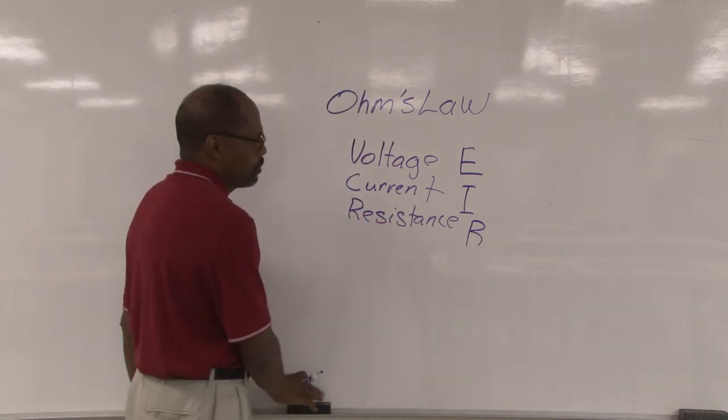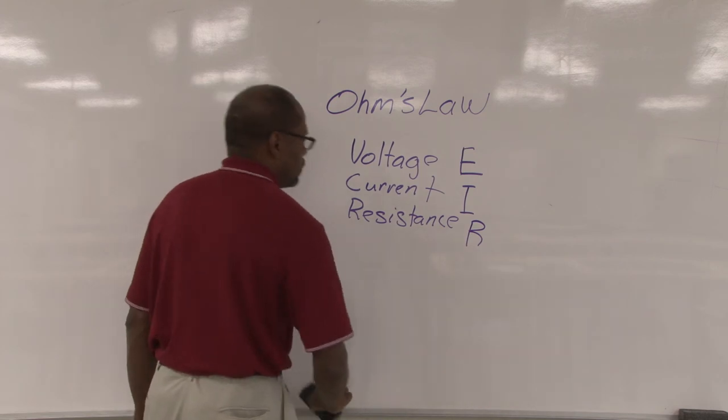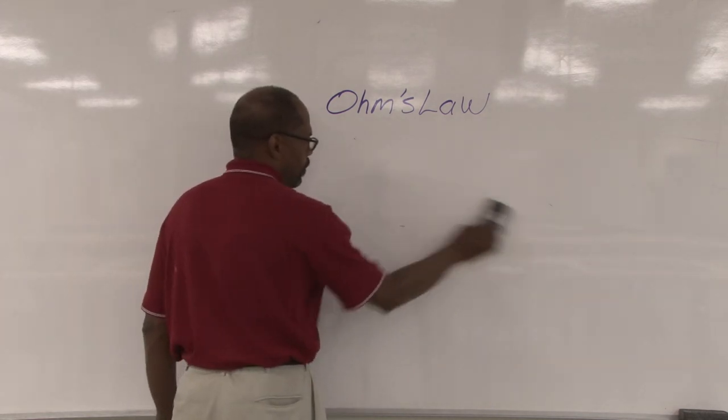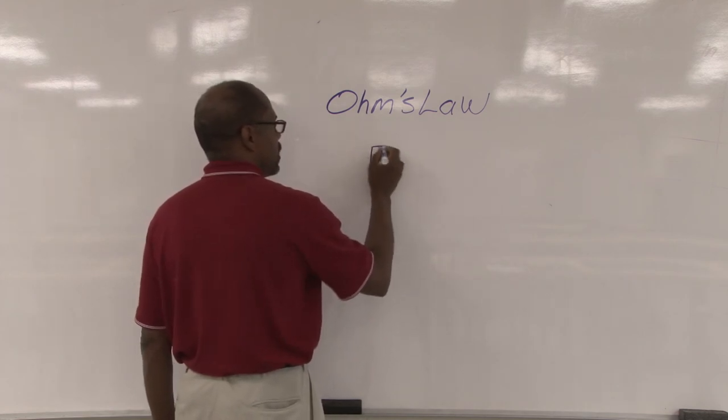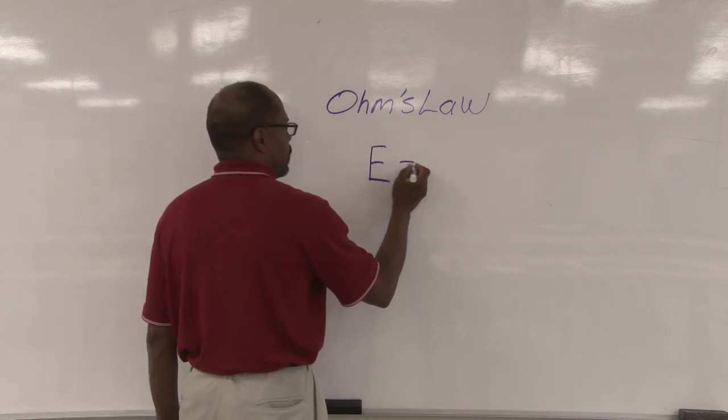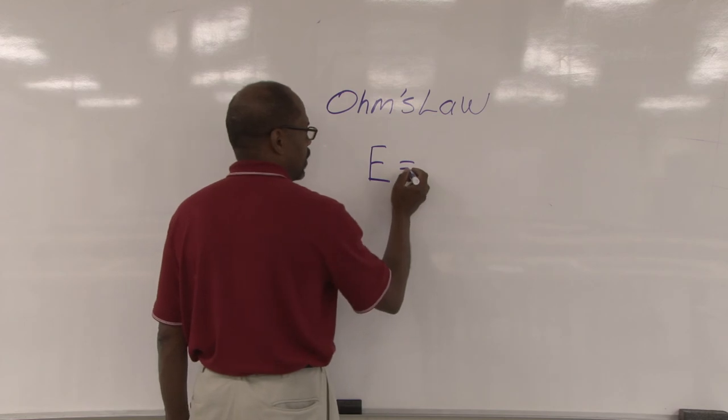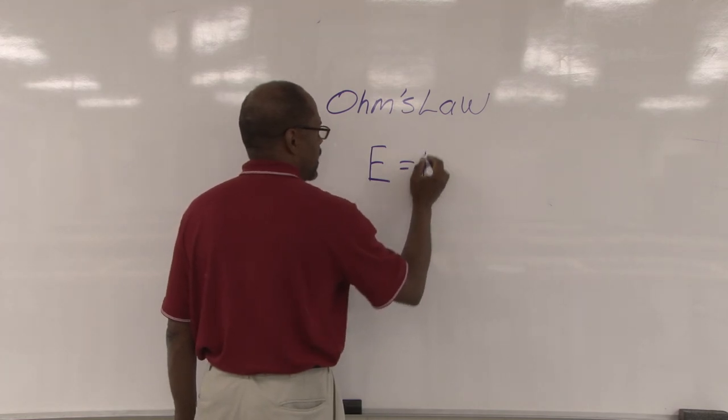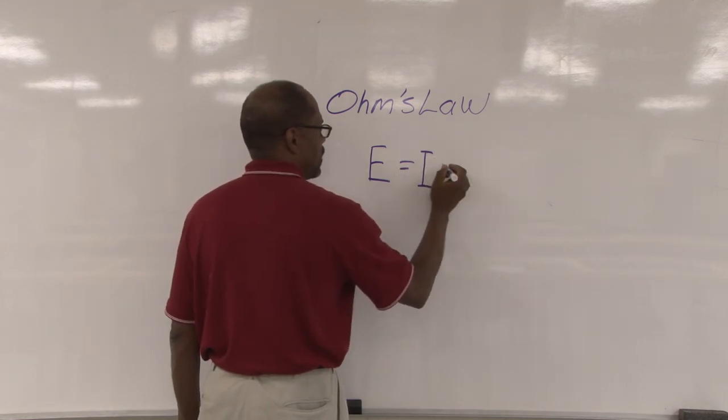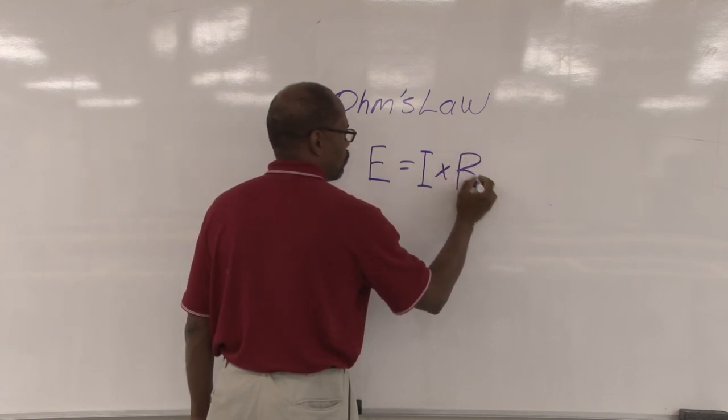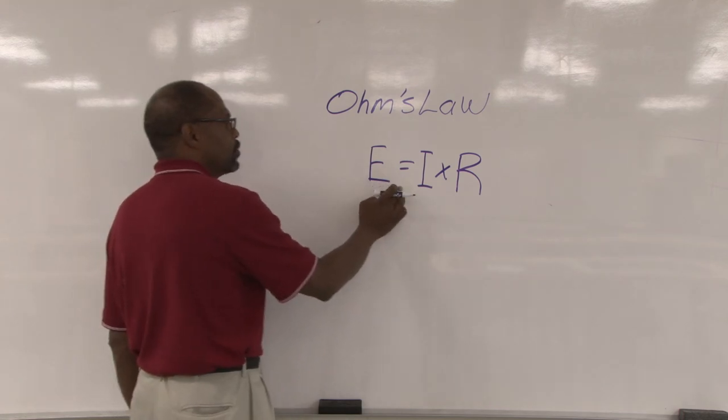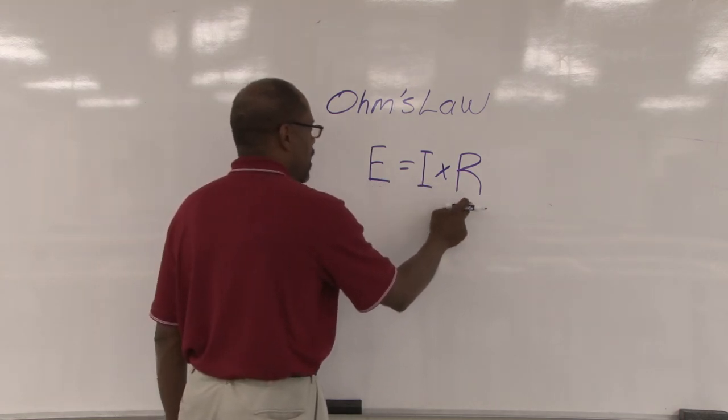If you look at Ohm's Law, you put it into a formula: E, which is voltage, equals I, which is current, times R, which is resistance. E equals I times R.